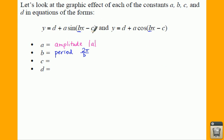Next up is C. C is inside the parentheses with your X, so that's a horizontal shift. We call that a phase shift. That means we're taking your entire graph and shifting it left or right.